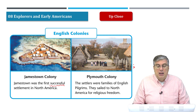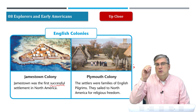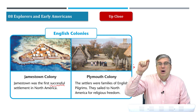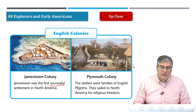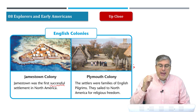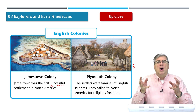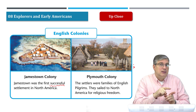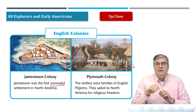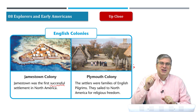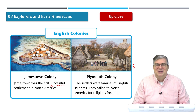Plymouth Colony was another famous colony in American history. The settlers who came to Plymouth Colony — that was in Massachusetts, on the northern part of the East Coast above New York — were families of English pilgrims. Pilgrims are people who go on a journey for a religious purpose. They sailed to North America for religious freedom. Some religious groups in England did not agree with the king's religion, so they ran away to America to make their own colony.